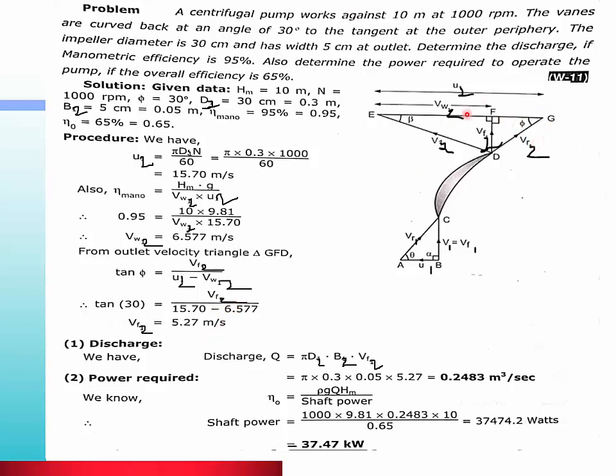Now we find the discharge. The formula is Q = πD₁B₁VF₁ or πD₂B₂VF₂. We will use D₂, B₂ and VF₂ which are given to us. This gives Q = 0.2483 cubic meters per second.